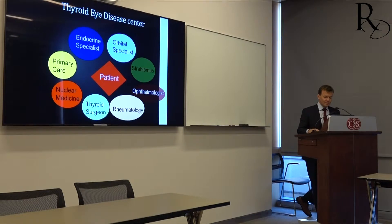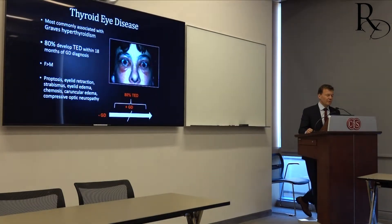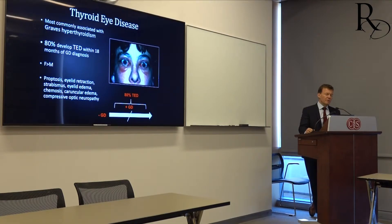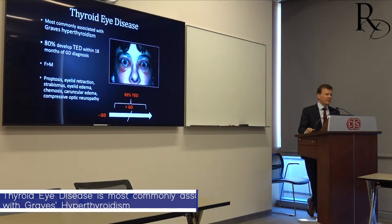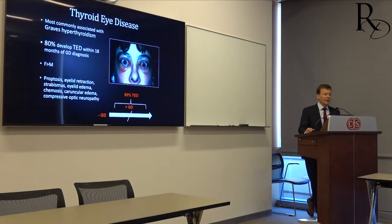There are several things that are common with Graves' disease and thyroid eye disease. Just as Dr. Khan said, it's most commonly associated with Graves' hyperthyroidism — not always, but about 80% of the time — and it usually occurs within the first year or 18 months. They usually occur together.